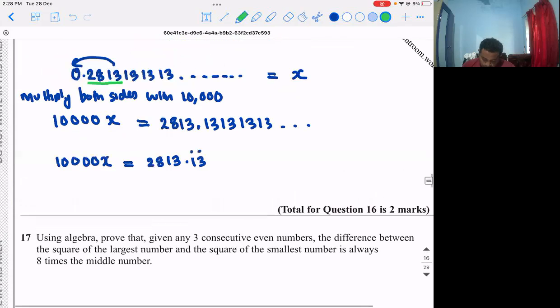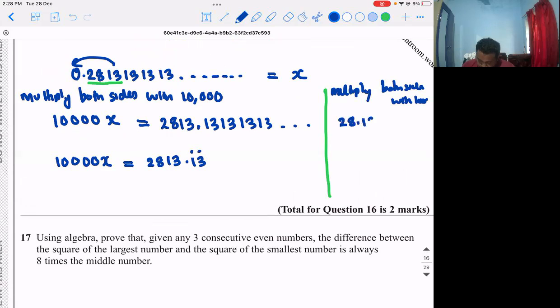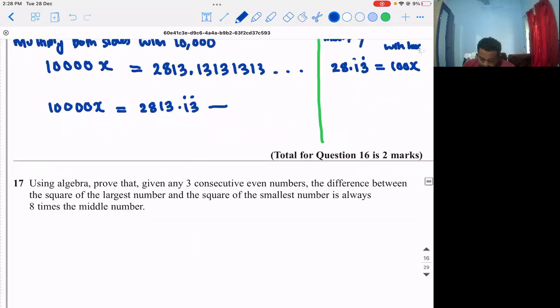Then also, I'm multiplying both sides by 100 so that we can shift two decimal places to the left. So what happens? 100x equals 28.13. We develop two equations, right? Equation 1 and equation 2.